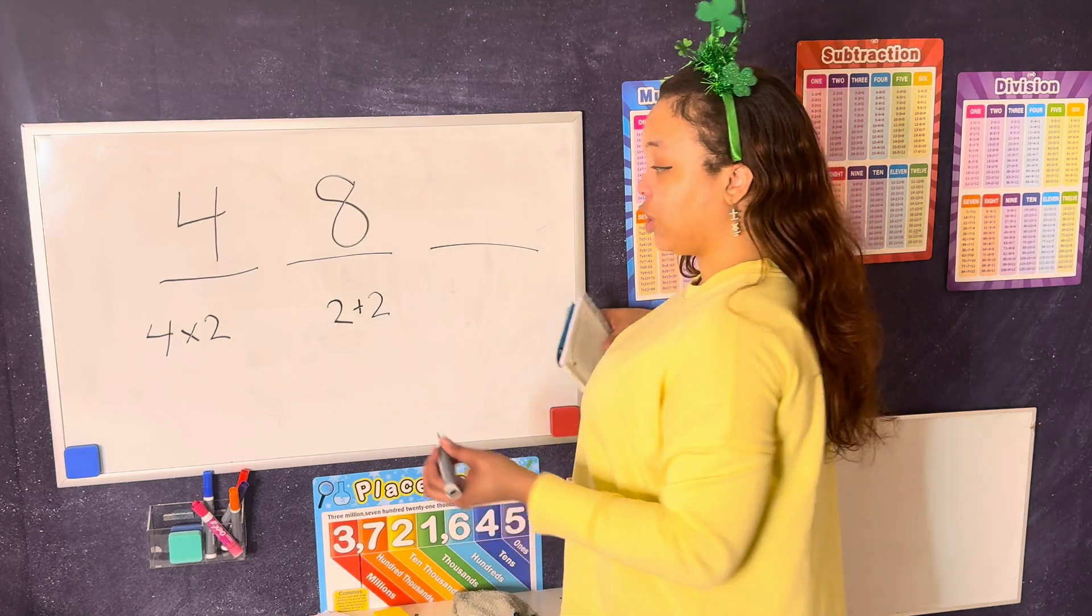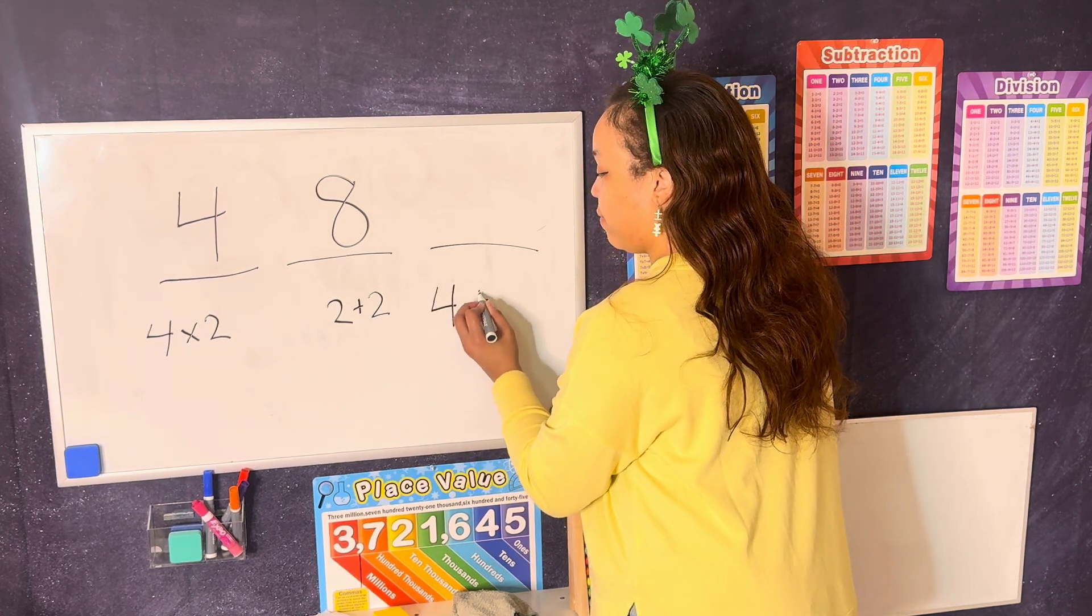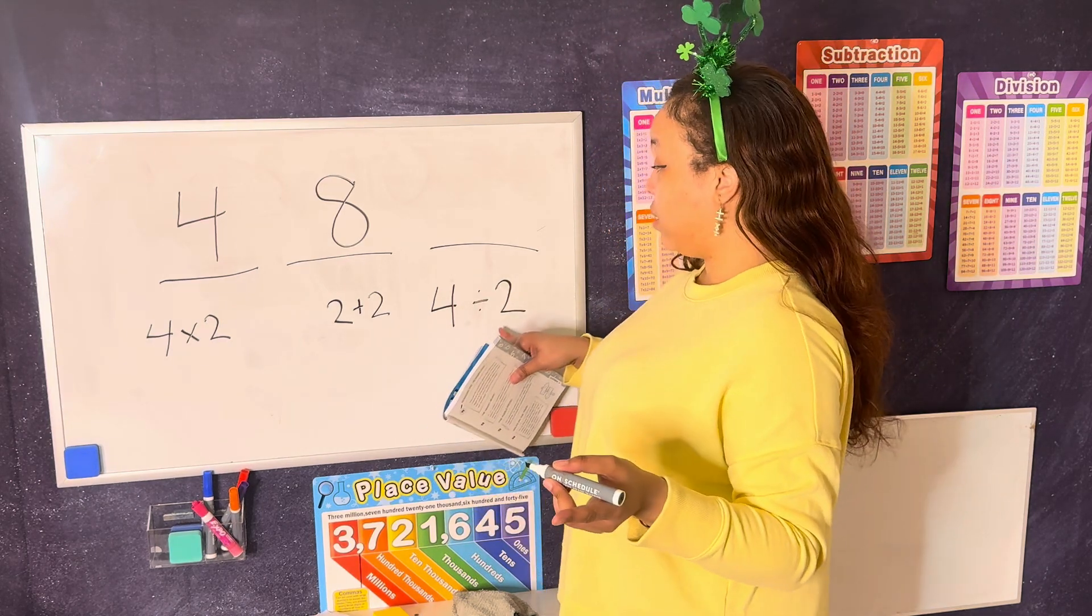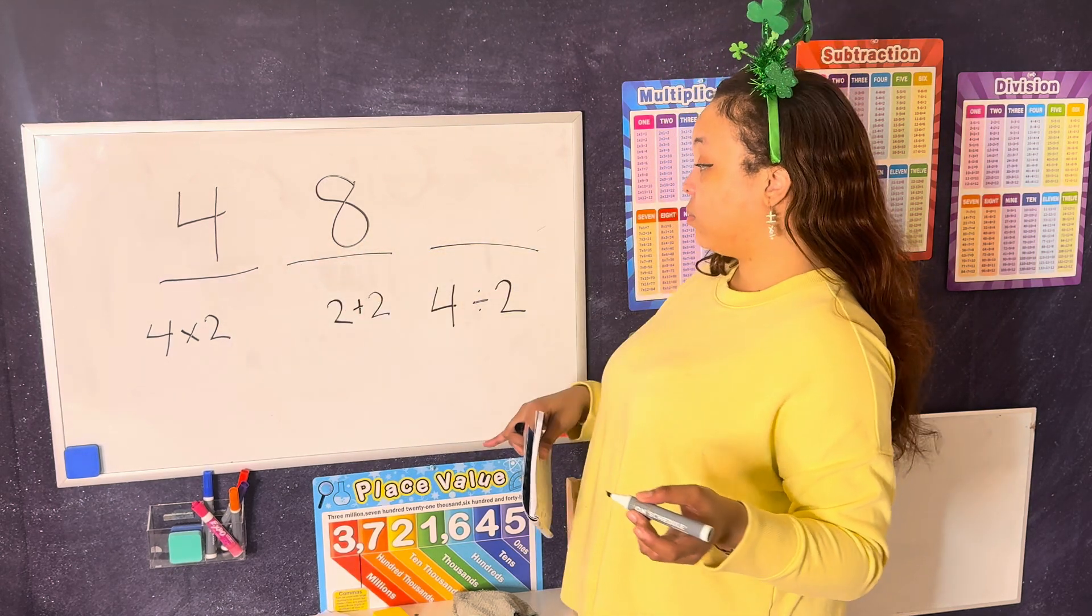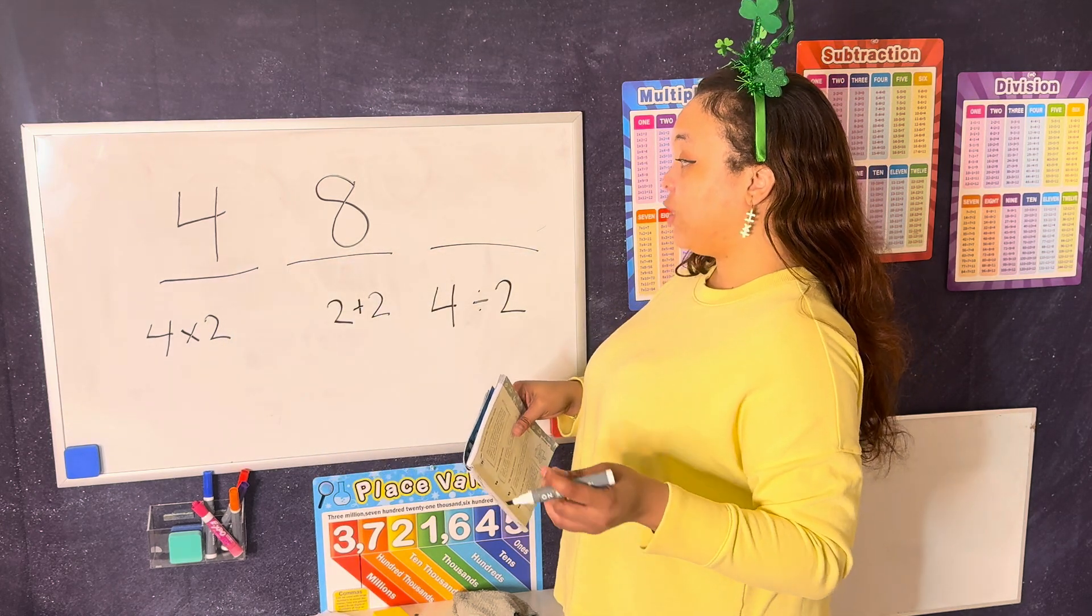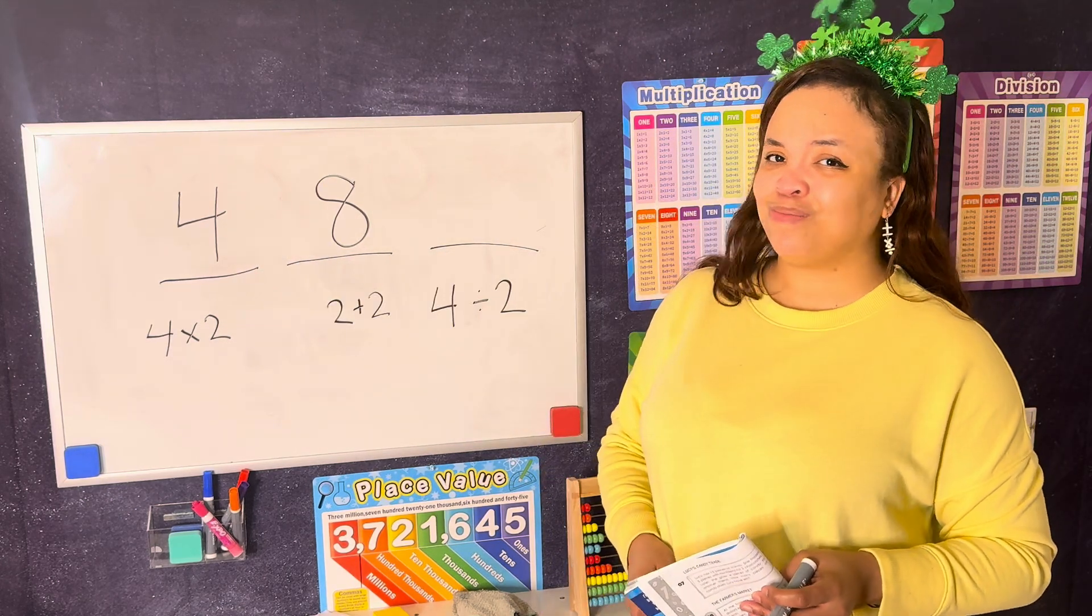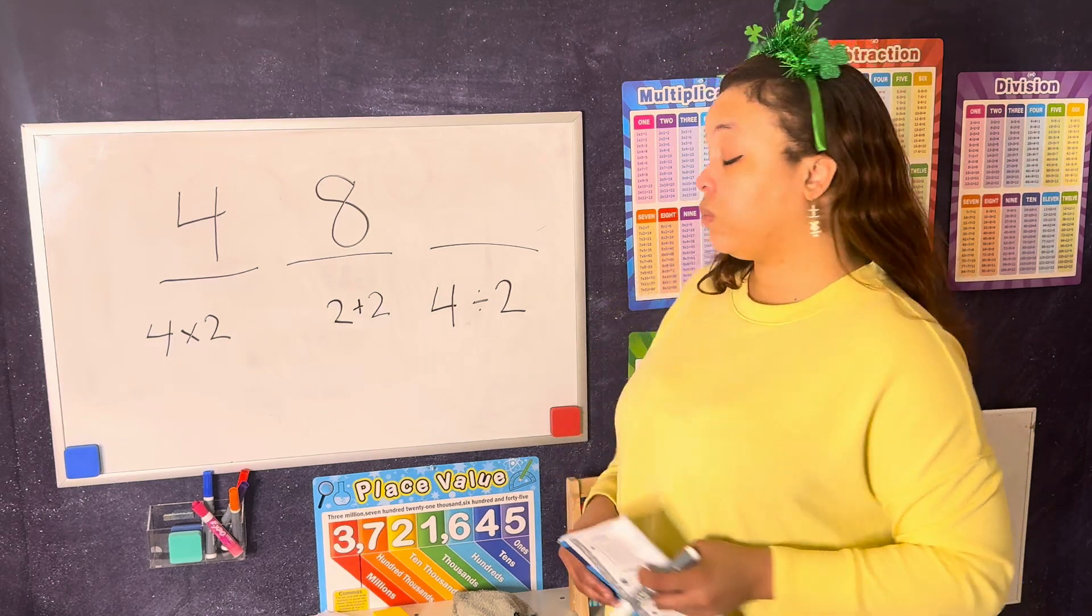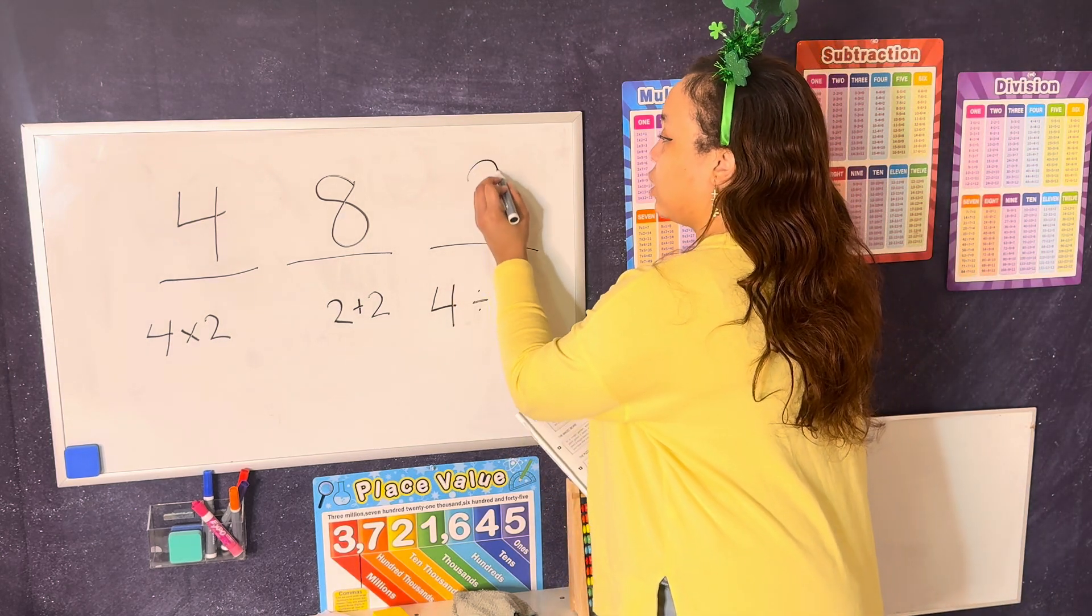But since we're working on division, we are going to focus on 4 divided by 2. And remember what I said. Anything divided by 2 is half of the number. And to check what half of that is, we just try to figure out what number plus itself will give you 4. 1 plus 3, those two numbers aren't equal. 2 plus 2 is equal. So half of 4 is 2.